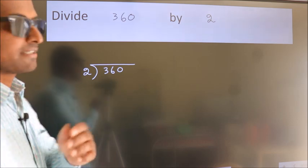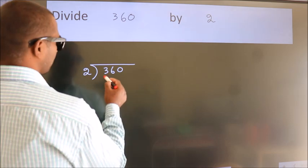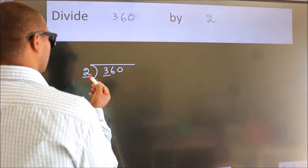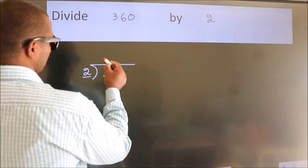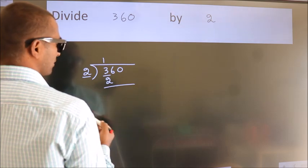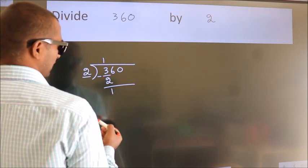Next, here we have 3. Here 2. A number close to 3 in 2 table is 2 ones 2. Now we should subtract. We get 1.